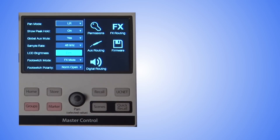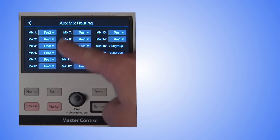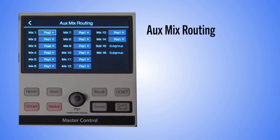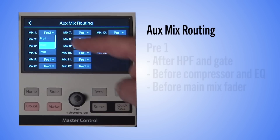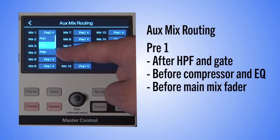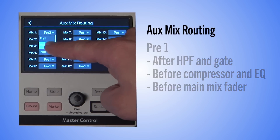The Augs Routing screen is where you change the Pre/Post routing for each of the available Augs mixes. There are three settings to choose from. Pre-1 sends the channels to the Augs mix after the high pass filter and gate, but before the compressor, EQ, and main mix fader.